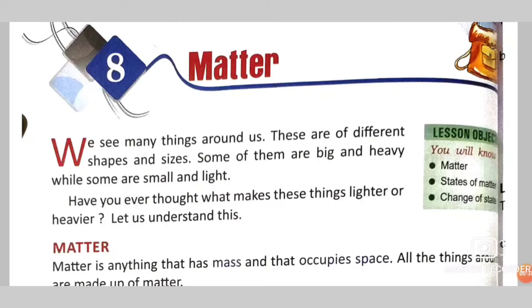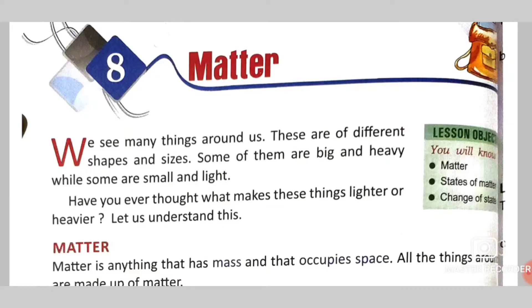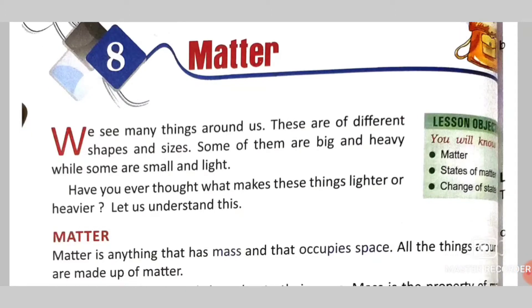First we have to know what matter is. Basically we see many things around us. If we are in a room, we can see a chair, table, bed, window, door, and cupboard. These things are all different in shapes and sizes. Some of them are big, some are small, some are heavy, some are light. All of these things are called matter.